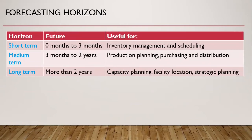Forecasting horizon can be divided into three: short term, medium term, and long term. Short term range from 0 months to 6 months, and it is useful for inventory management and scheduling. Medium term range from 3 months to 2 years, and it is useful for production planning, purchasing, and distribution. Whereas long term is more than 2 years, and it is useful for capacity planning, facility location, and strategic planning.